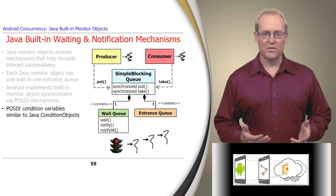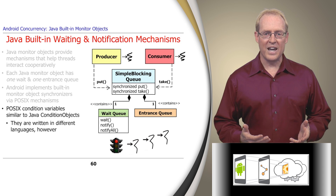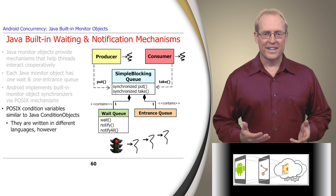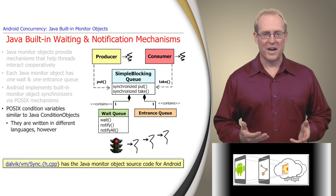POSIX condition variables are conceptually similar to Java condition objects discussed in our earlier video, though their implementations differ since they're written in different programming languages. For example, condition objects are written largely in Java, and POSIX condition variables are written in C, as shown at these path names.